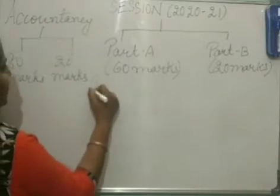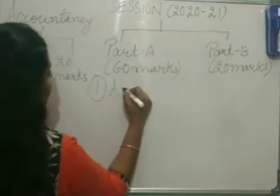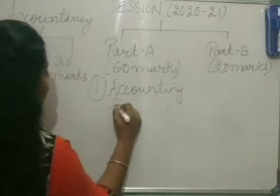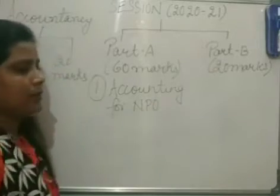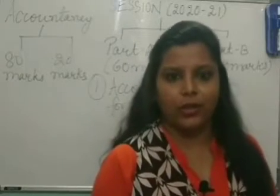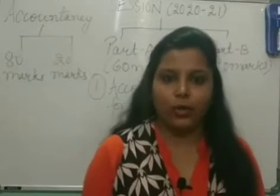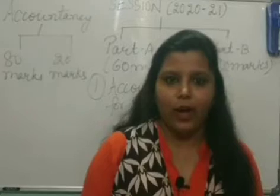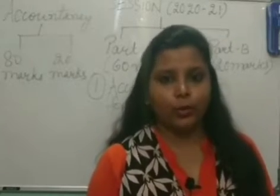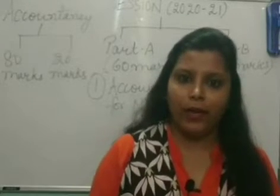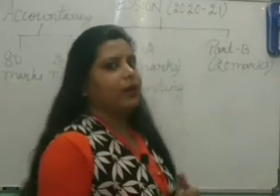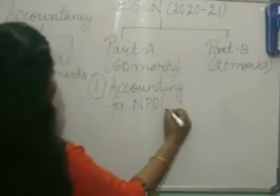Part A consists of three units, and the first unit is Accounting for NPO — that is, Not-for-Profit Organization. This is an organization whose motive is not profit but to work for the welfare of the society. This unit covers how they manage their accounts and consists of 10 marks.